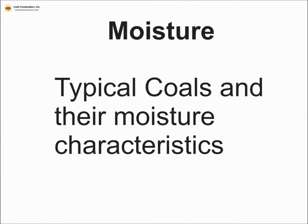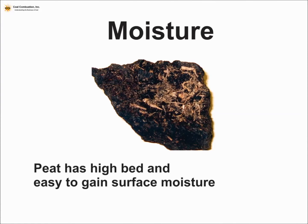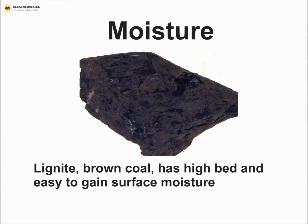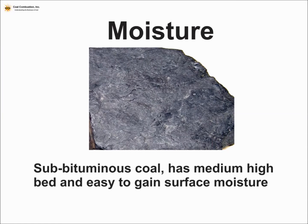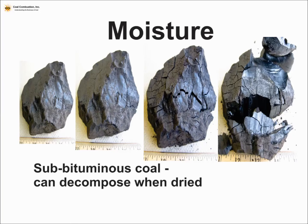Here are some pictures and typical moisture characteristics, looking at that bed or inside moisture versus the propensity or desire for a coal to have high surface moisture. High fine sizes, or a lot of fines, always increases the surface area of the material, so surface moisture has more of an impact, particularly with handling. As we progress through the ranks, there are lower and lower bed moistures. Sub-bituminous coal, unfortunately, when it dries, tends to crack up and create more fines, which again leads to problems with more surface moisture.